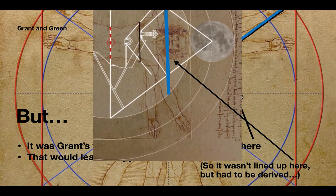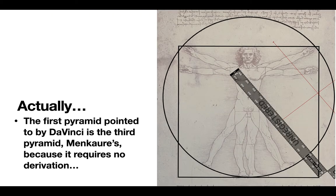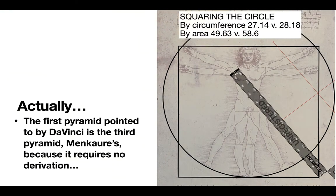Not like that, although that's the way it was originally revealed, the 51.84. But actually, the first pyramid pinpointed by da Vinci is the third pyramid, Menkaure, because it doesn't require any derivation.